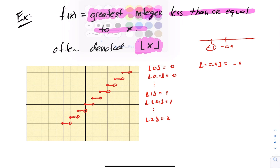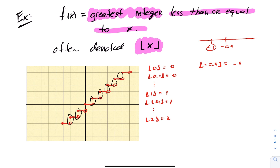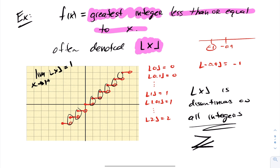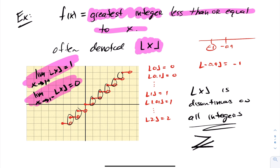The points of discontinuity of the floor function are visible in the graph. The floor function is discontinuous on the set of integers. At each integer, the limit from the left and right give different values, so the limit does not exist. For example, the limit as x approaches 1 from the right of the floor of x is 1, but the limit from the left is 0 — so the limit does not exist at x equals 1.